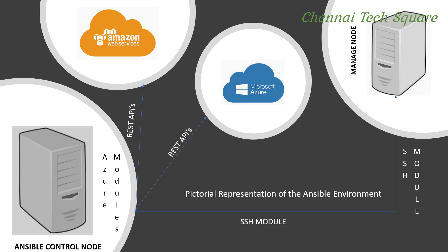In order to manage Unix servers using Ansible, we just need the SSH service enabled on all client machines, which is enabled by default. To manage Windows servers using Ansible, a service called WinRM — which is Windows Remote Management — should be running on all Windows clients.